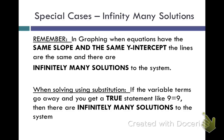Because no matter what I put in there for x and y, I would get the same solution. Now when we are solving using substitution, again we can't see that that is the same line. So when you are solving by substitution, if the variable terms go away and you get a true statement, something like 9 equals 9, then there are infinitely many solutions to the system.